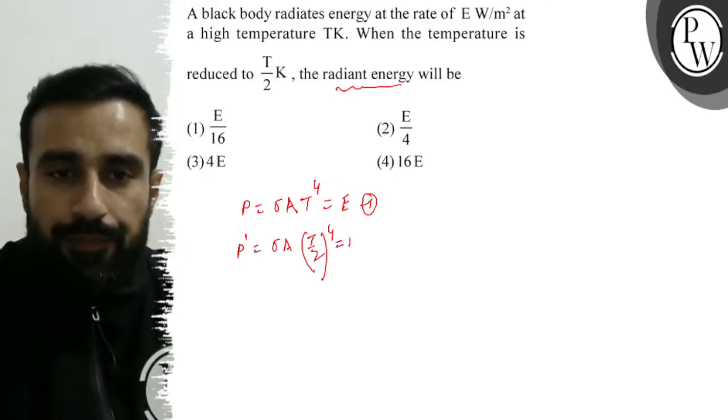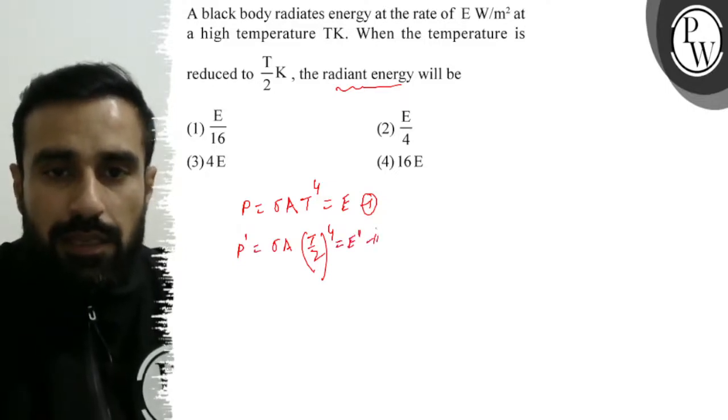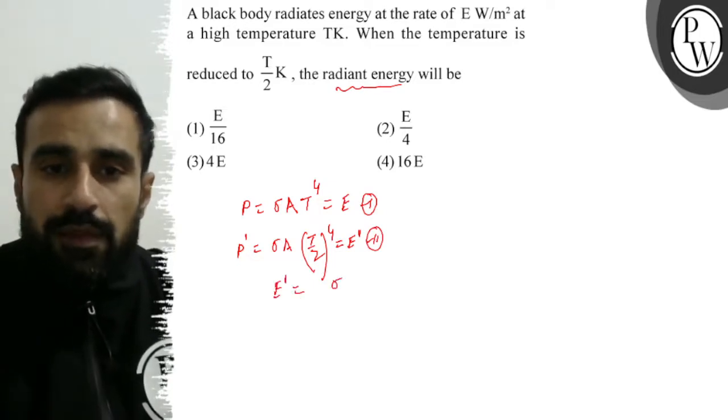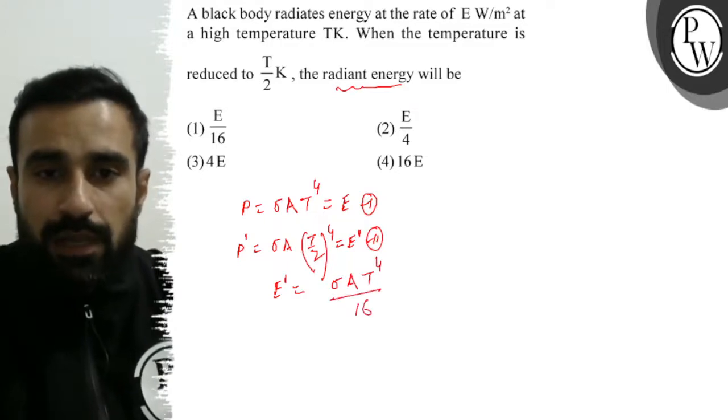So E dash, what will be the value of E dash? Sigma A, T to the power 4 divided by 16. And this term is E.